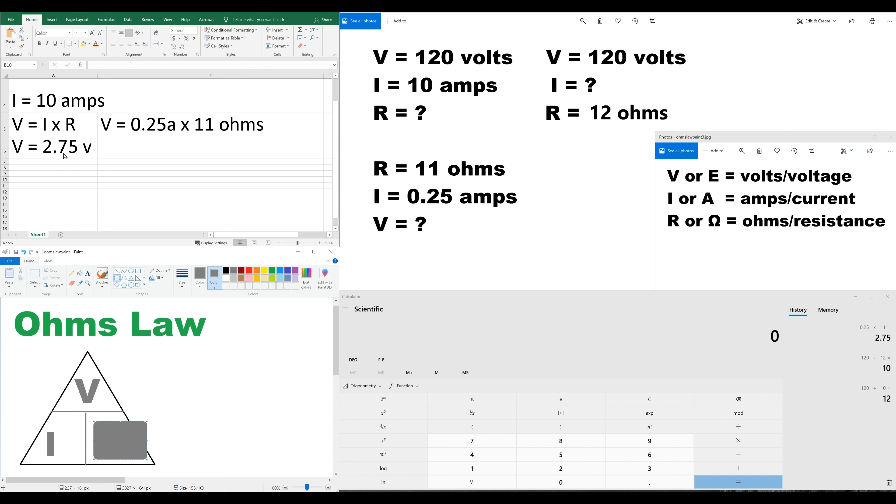So, our V is 2.75. And we are over top of I. So, we divide by our 0.25 amps. And we get 11 ohms. So, it works out. We verified that that was correct.